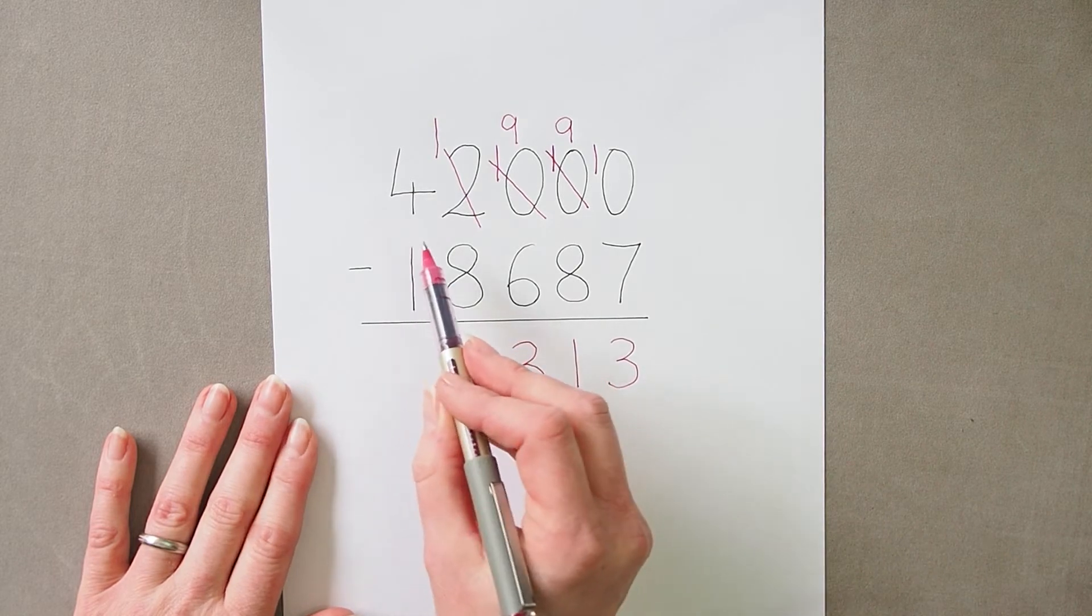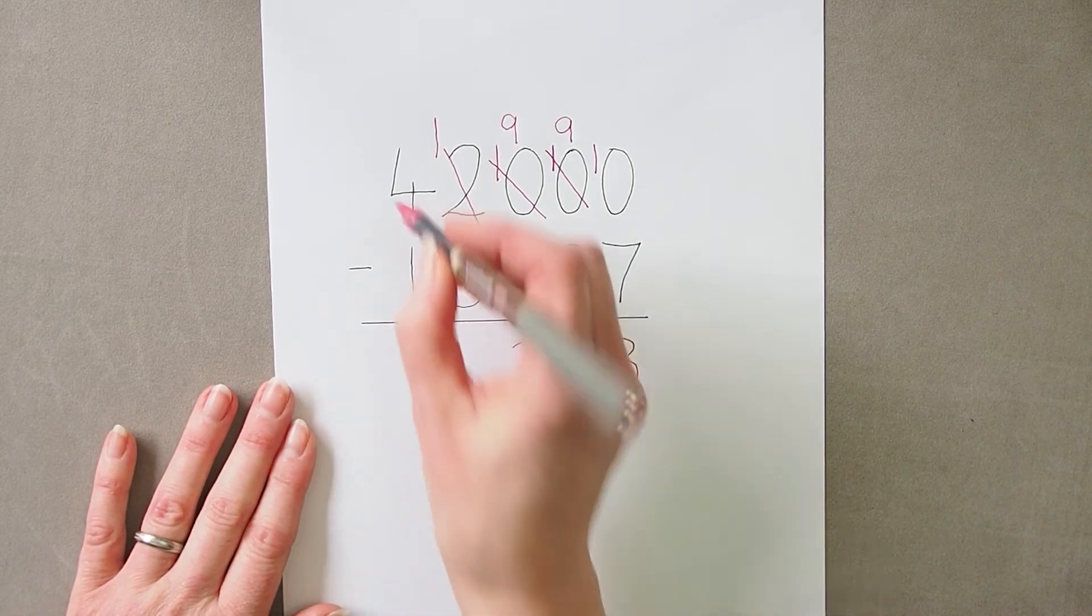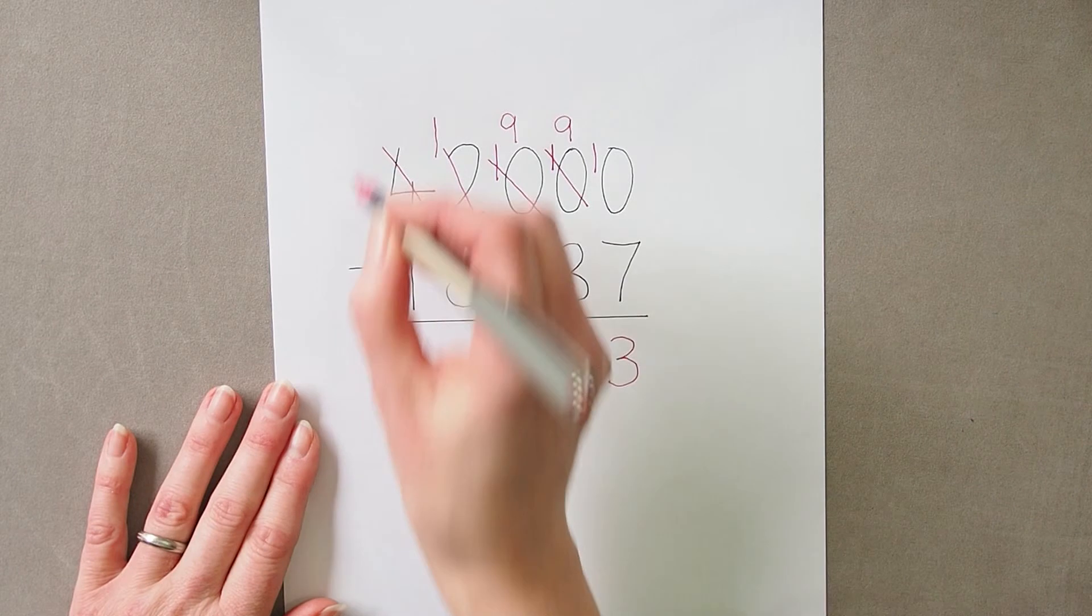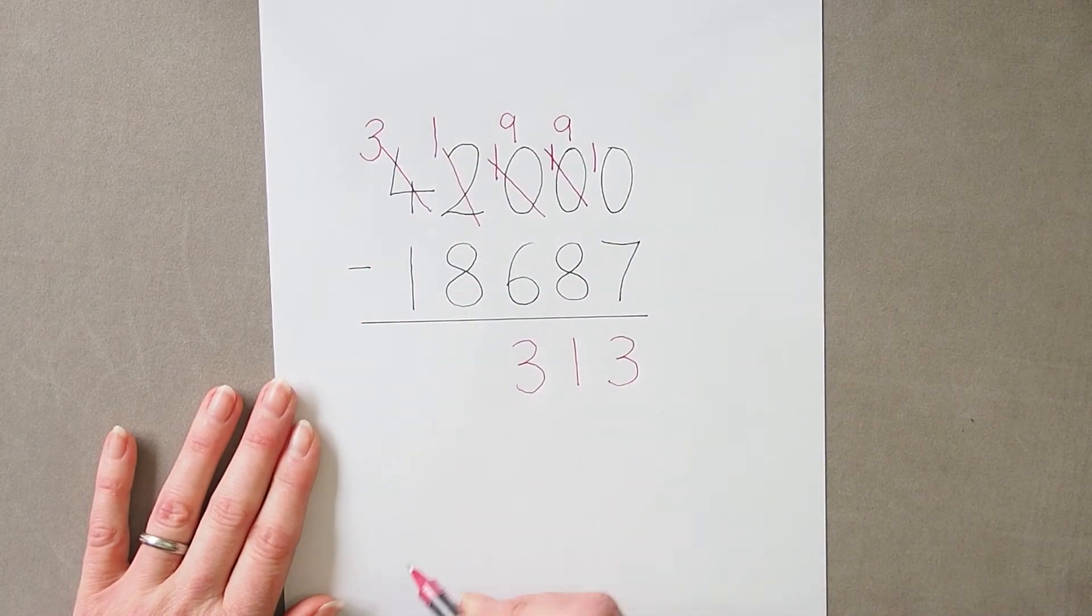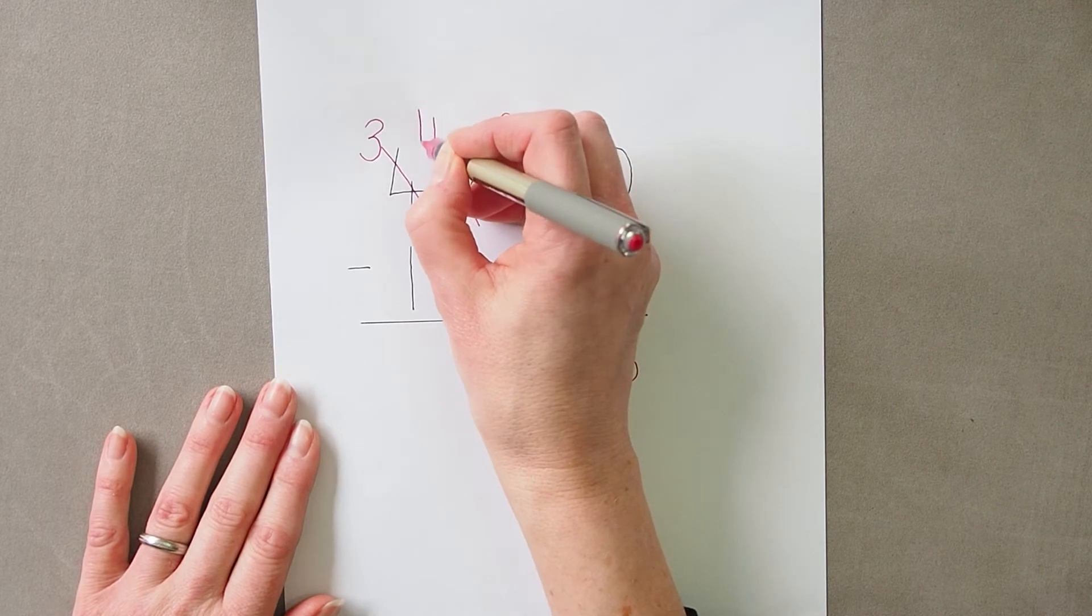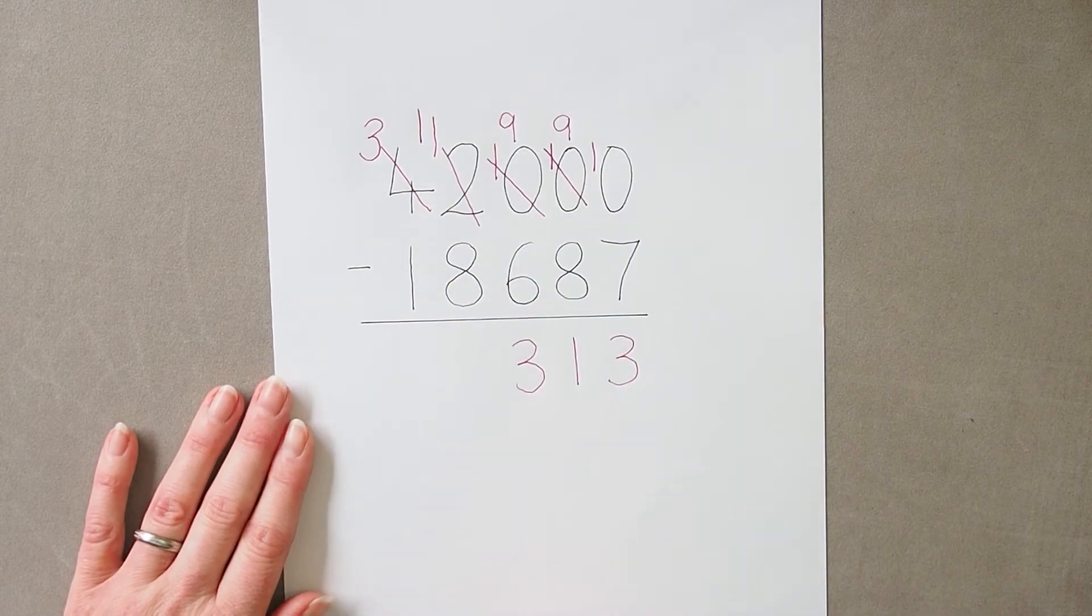And here I need to exchange again. I've got one take away eight, so I'm going to exchange one of my ten thousands and put that ten thousand into the thousands column.